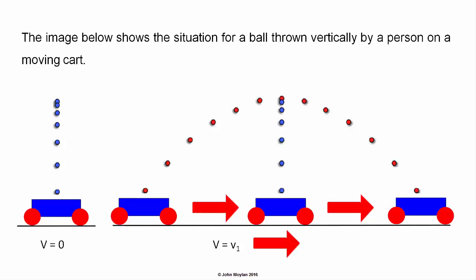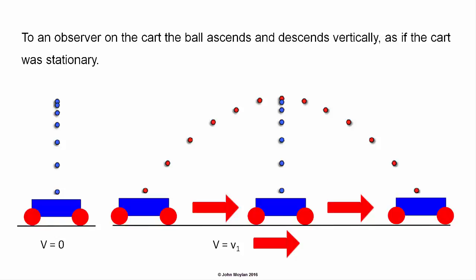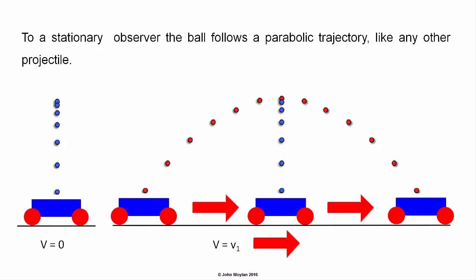The image below shows a situation for a ball thrown vertically by a person on a moving cart. To an observer on the cart, the ball ascends and descends vertically, as if the cart were stationary. To a stationary observer, the ball follows a parabolic trajectory like any other projectile.